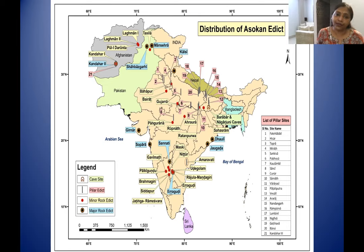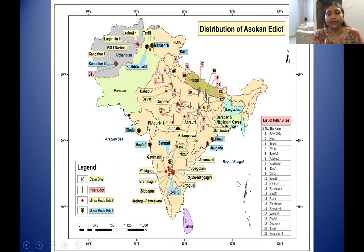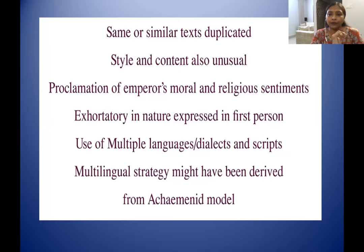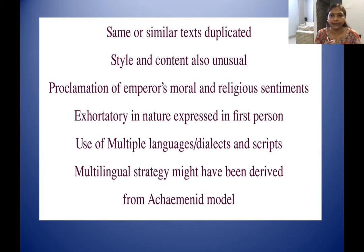In the west we have Girnar in the Gujarat-Kathiawar region, and in the east we have Dhauli and Jaugada in Odissa. About the Ashokan inscriptions briefly — for those not well conversed with epigraphic material — they are unique because they have the same or similar text duplicated across sites, like photocopies of royal orders sent everywhere.